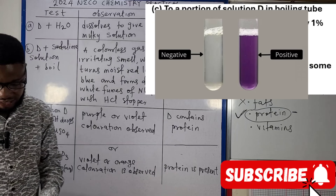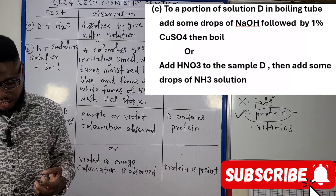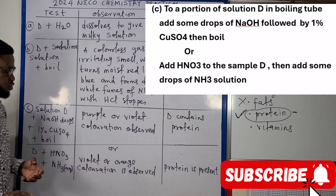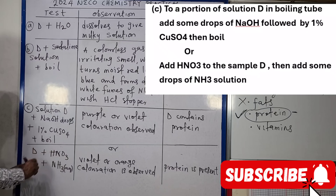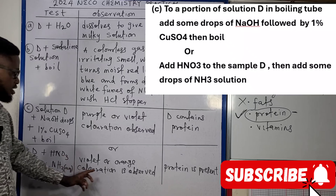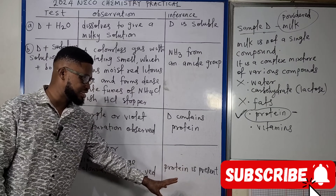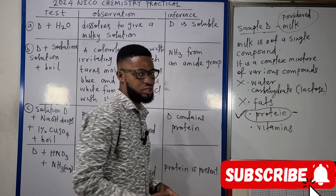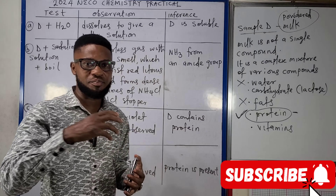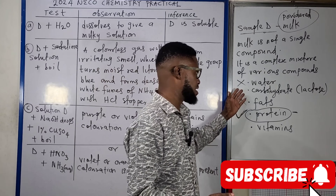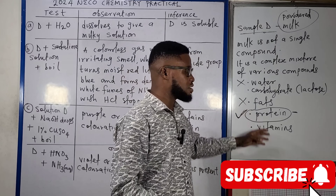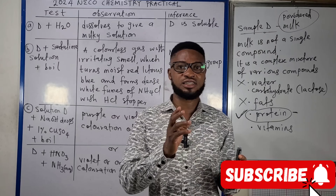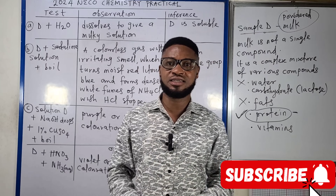Alternatively, we can add HNO₃ to sample D followed by drops of ammonia solution. A violet or orange coloration confirms that protein is present. We could have been testing for carbohydrates like lactose using Benedict's solution or Fehling's solution, but since those reagents were not requested, we know we are not testing for that. Protein is what to look out for, and with that we have come to the end of salt analysis for NECO 2024. From myself and the entire team — bye for now.